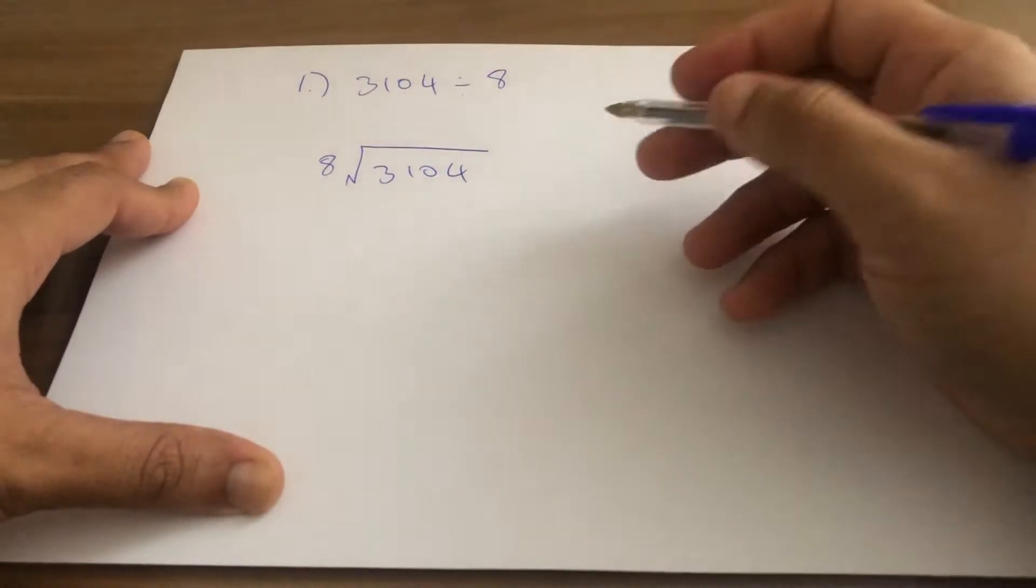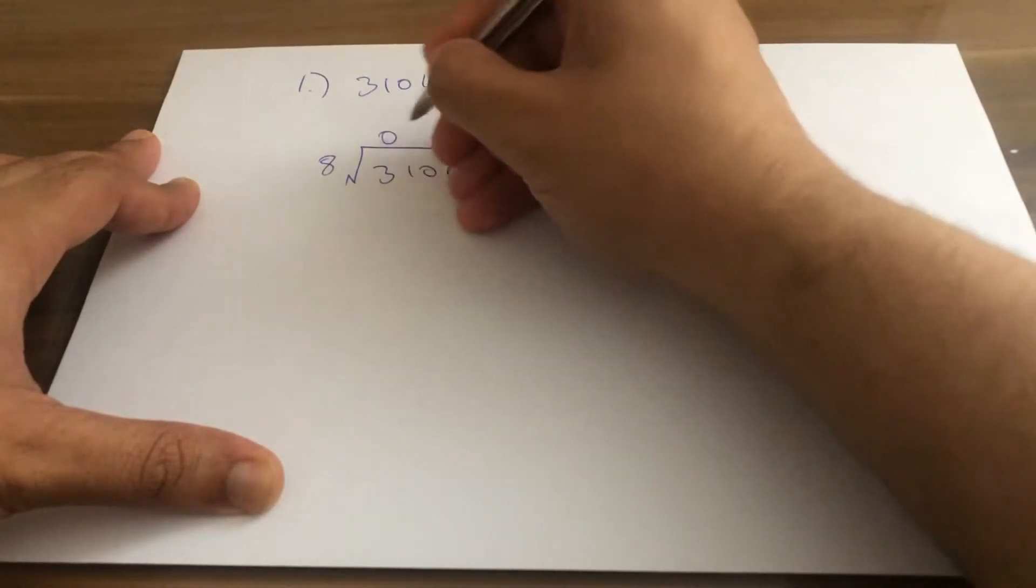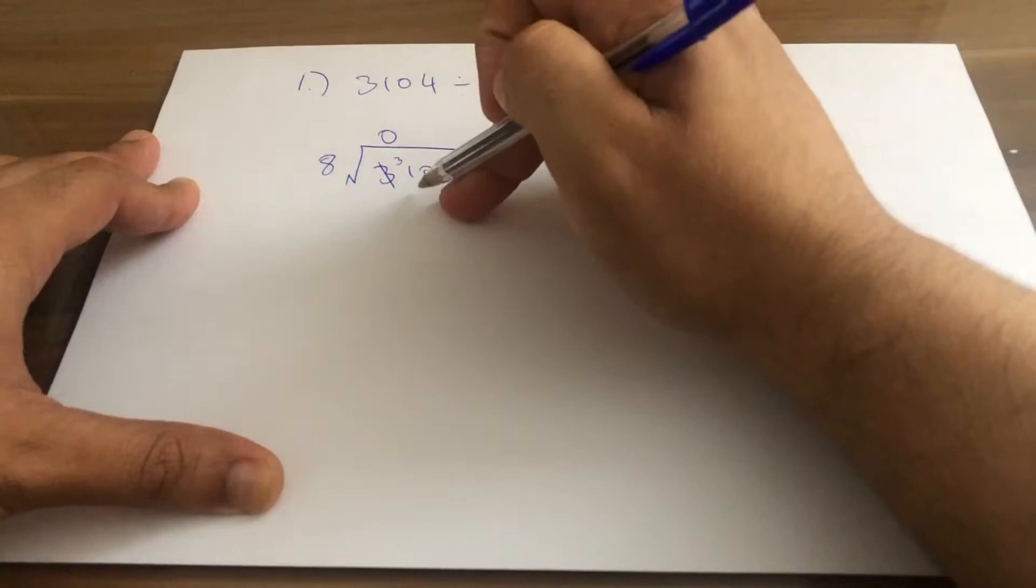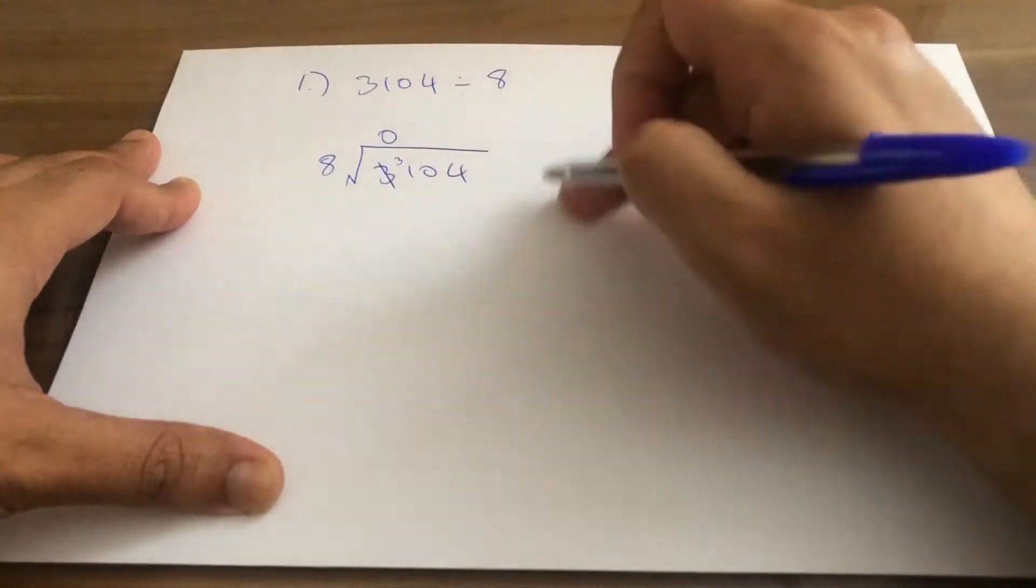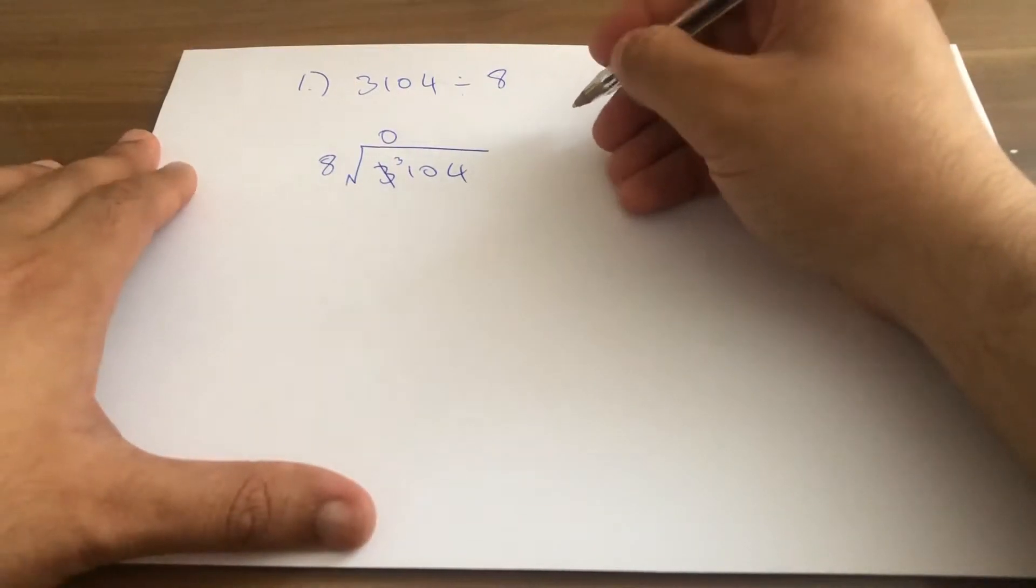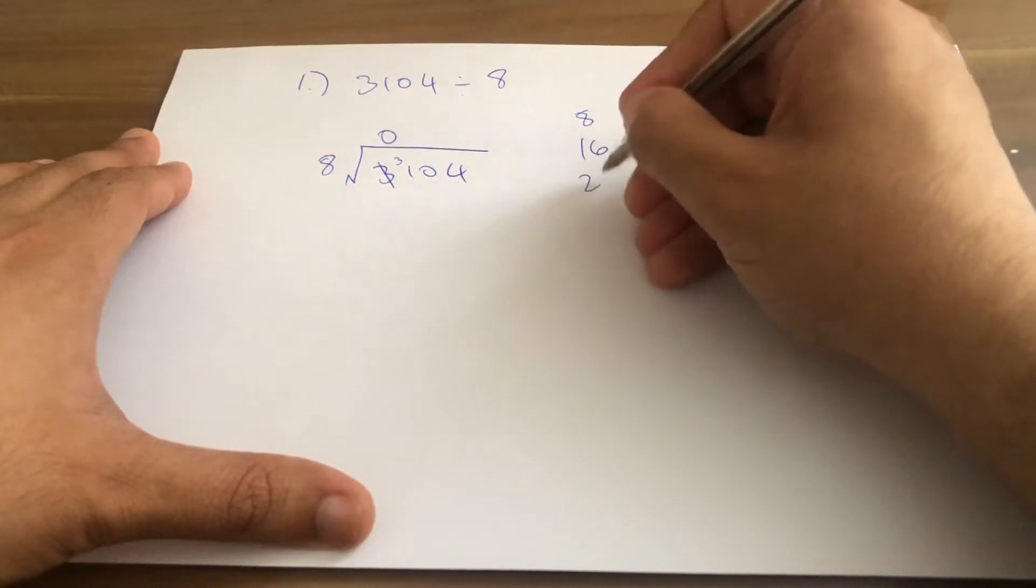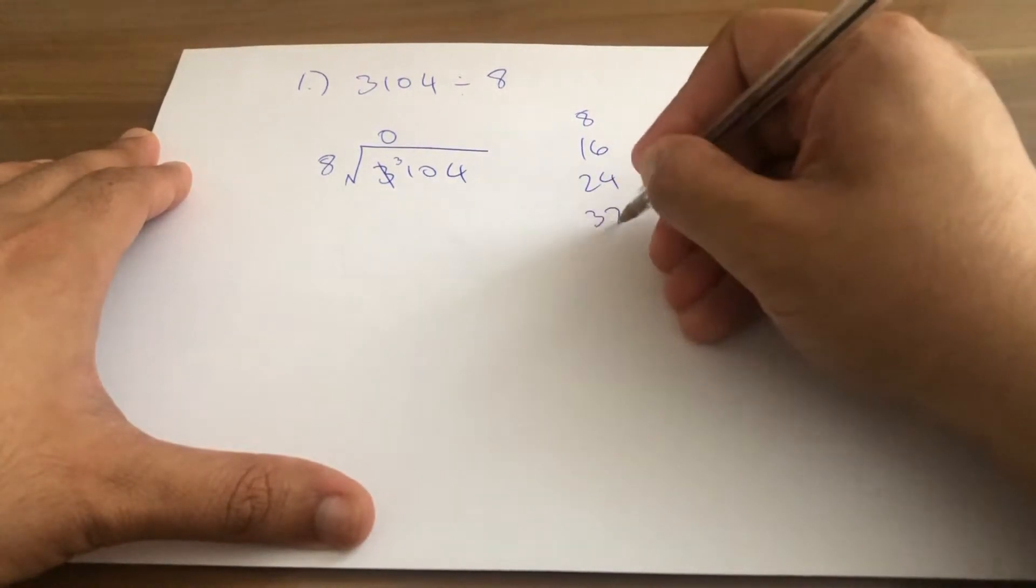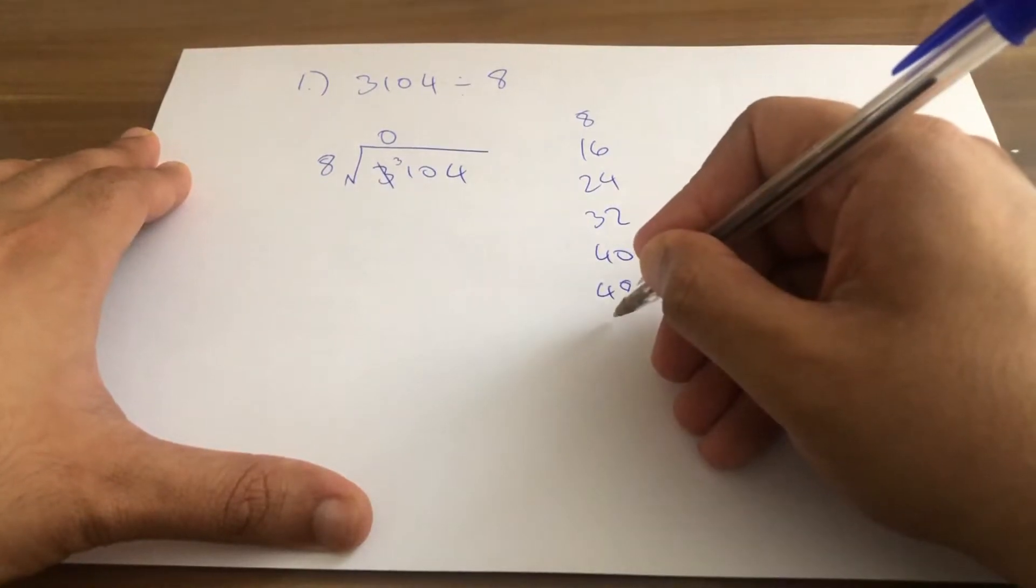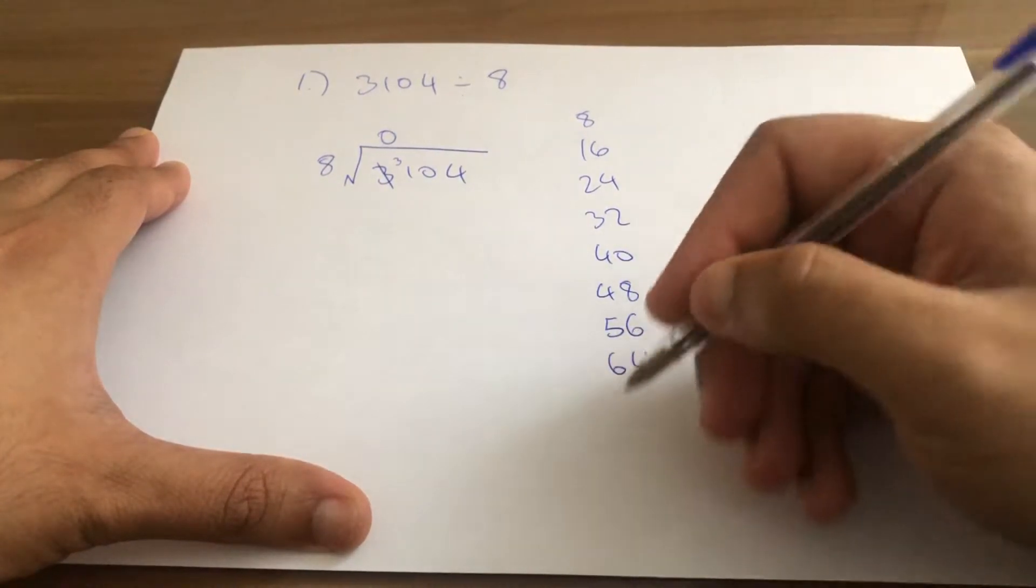Well, what we need to know is how many times does 8 go into 3? 0 times, we carry the 3 over to the top. How many times does 8 go into 31? Before I work anything out, I would look at my times tables: 8, 16, 24, 32, 40, 48, 56, 64, and so on.